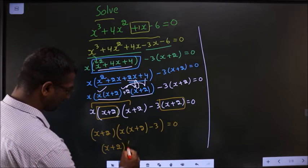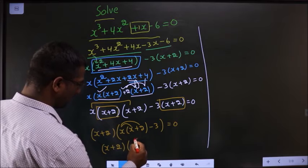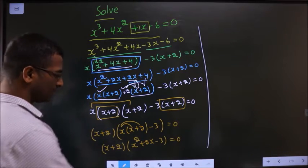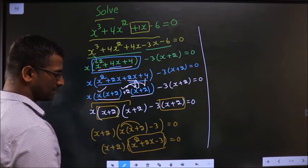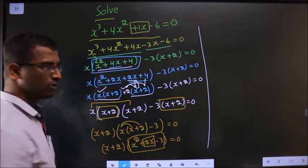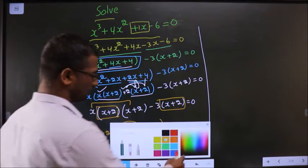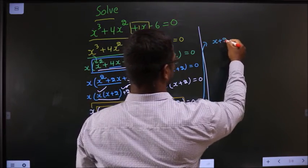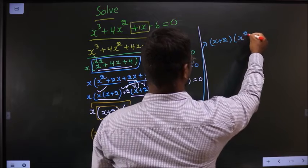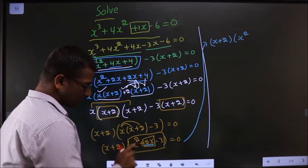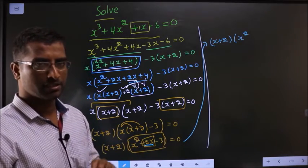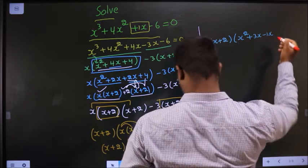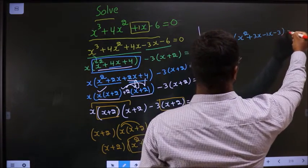x plus 2, times — so what do I get? x square plus 2x minus 3 equal to 0. Again quadratic, I need to factorize, and this time also I will change the x term only. So it is x plus 2 brackets: x square. In place of plus 2x I will be writing plus 3x minus 1x, so plus 3x minus 1x, minus 3 as it is, equal to 0.